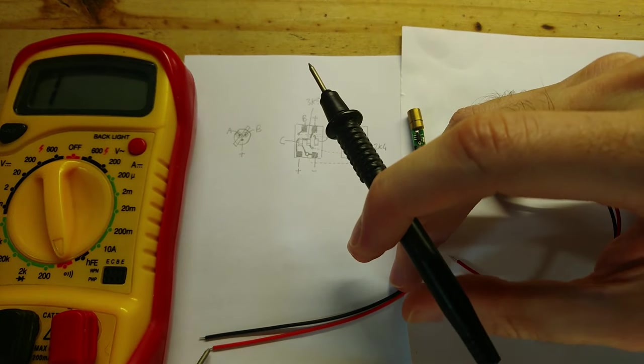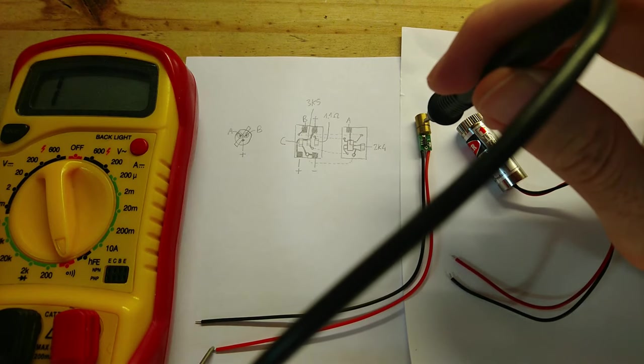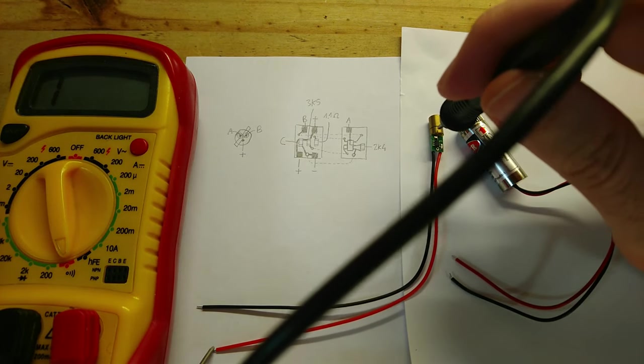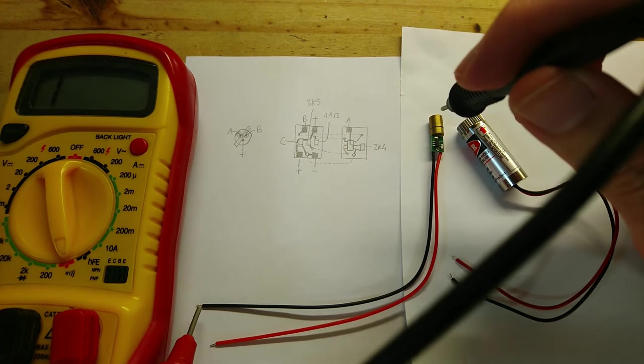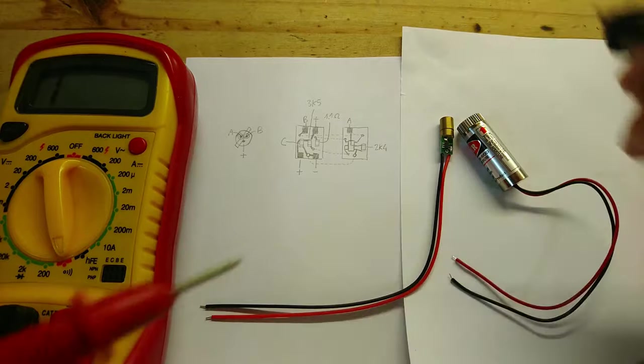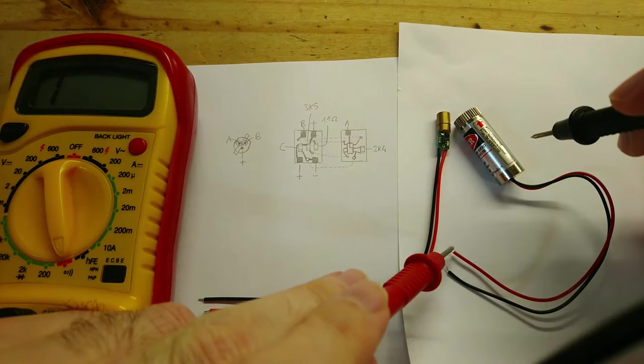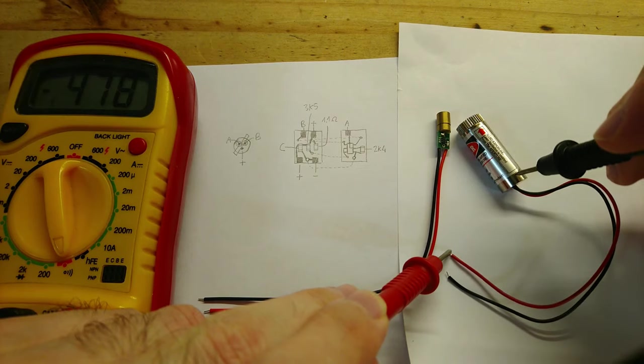If I connect this one to the positive, then I touch this one, so it is shorted to the positive. If I touch the negative, nothing happens.